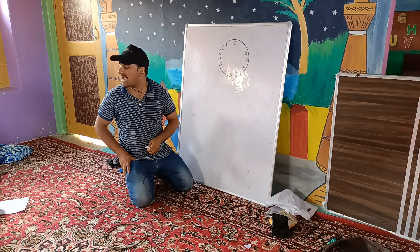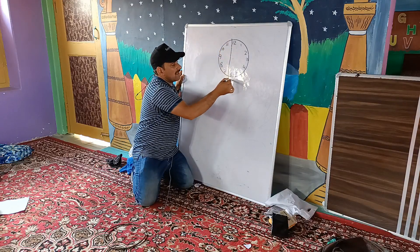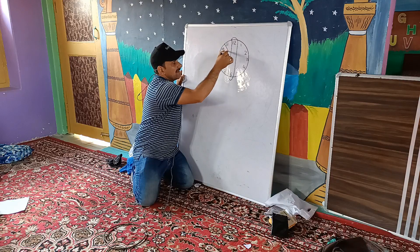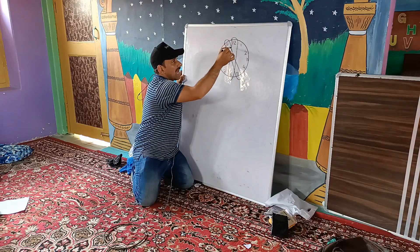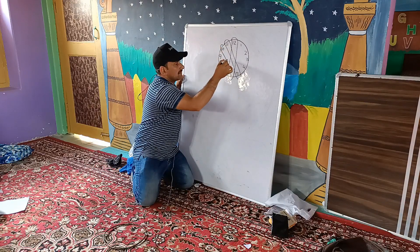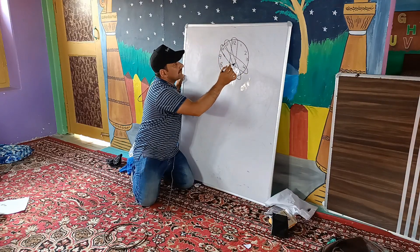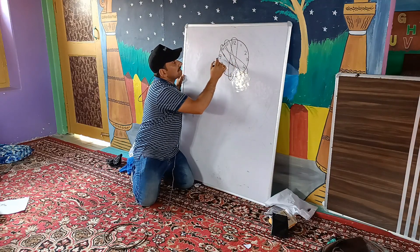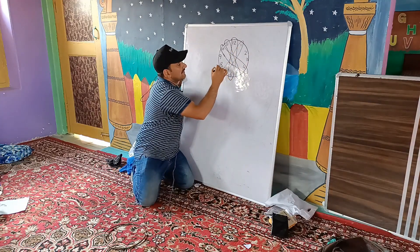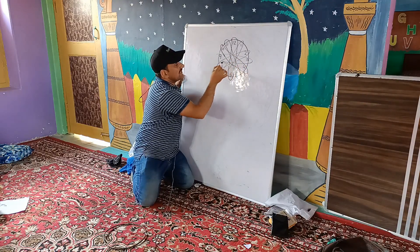Very good, Iman. Please listen — I will show you a magic. See: 12, like this. Opposite is 6. 11, opposite is 5. 10, opposite is 4. 7, opposite is 1. 8, opposite is 2. 9, opposite is 3.